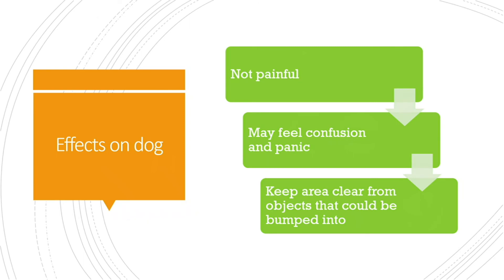Seizures in general aren't painful while happening, but afterwards the dog could feel confused or panicked. My aunt has seizures and describes it as a black spot in her memory — she would still know she had one by how she feels differently afterwards. Importantly, clear the area when your dog is having a seizure because uncontrollable muscle movements could cause them to roll into something and get hurt — that's where the real danger comes from. Also, don't stick your hand in the dog's mouth; dogs cannot swallow their tongue, and you'll likely just get bitten.